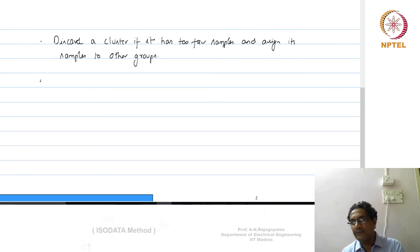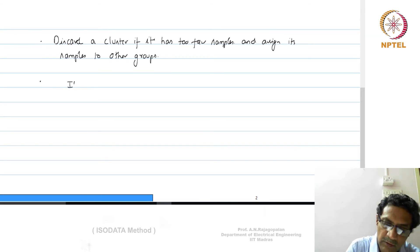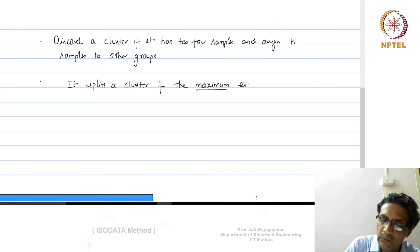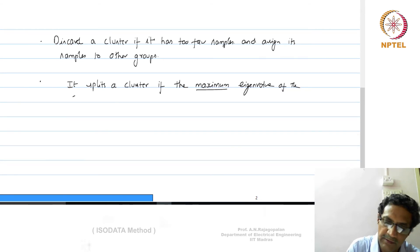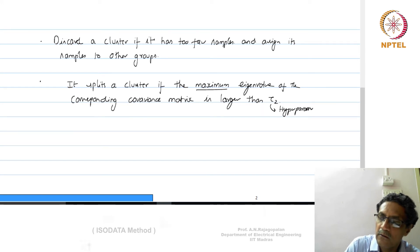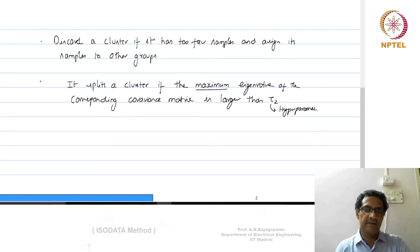ISODATA also splits a cluster. It splits a cluster if the maximum eigenvalue of the corresponding covariance matrix is larger than a threshold tau_2, which is another hyperparameter we need to fix.